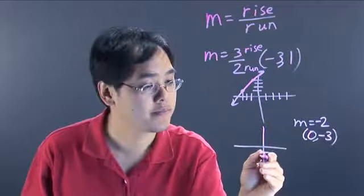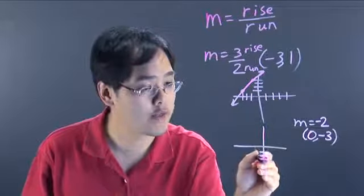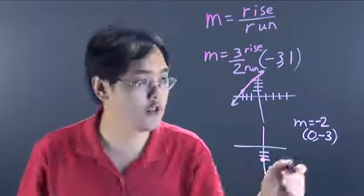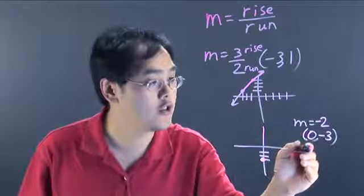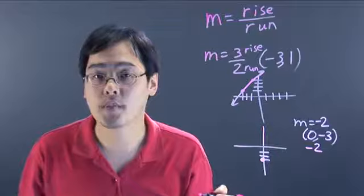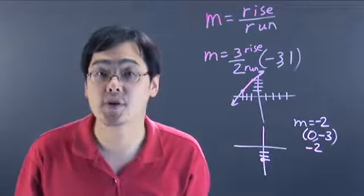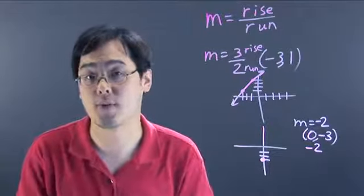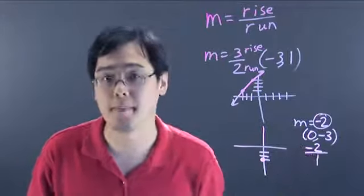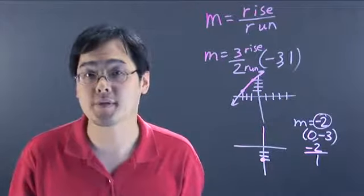What that means here is you're going to graph zero, negative three first and then you're going to use the slope negative two. Anytime you have a slope, if it's a whole number, you actually want to write it as a fraction because you want to take advantage of the rise over run relationship. So we're going to take the negative two and then rewrite it as negative two over one. Any whole number can be thought of as that number over one.